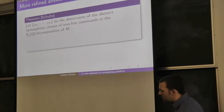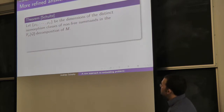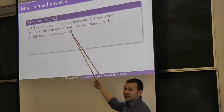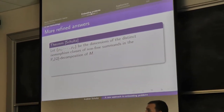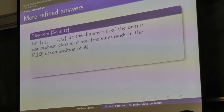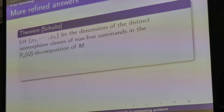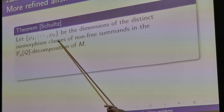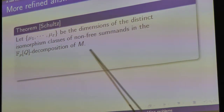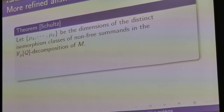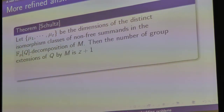The first step is to find all extensions of Q by M. You take an FpQ decomposition for your favorite FpQ module M — every FpQ module is isomorphic to a direct sum of cyclic modules. You take the isomorphism classes that show up in those decompositions, write down all their dimensions μ1 up to μz. The one number you're not allowed to write down is p to the m — you throw away the free modules.